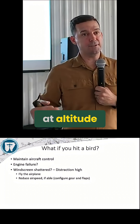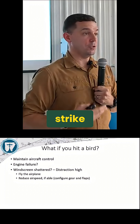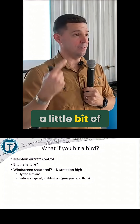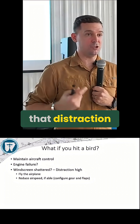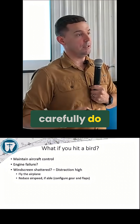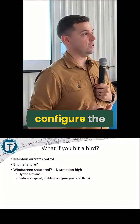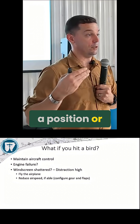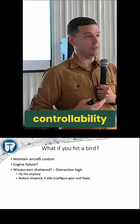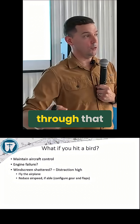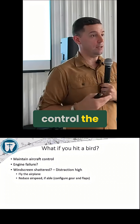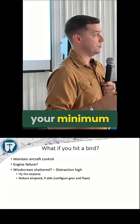Slowing down at altitude after a bird strike does one of two things. If your windscreen has failed, hopefully it's going to decrease a little bit of that distraction of that airflow coming into the cabin. The other thing you want to carefully do is slow down and configure the airplane into a position or an airspeed that you'd be comfortable landing at, making sure that you have controllability through that whole flight regime. If at any point you can't control the airplane, that becomes your minimum speed.